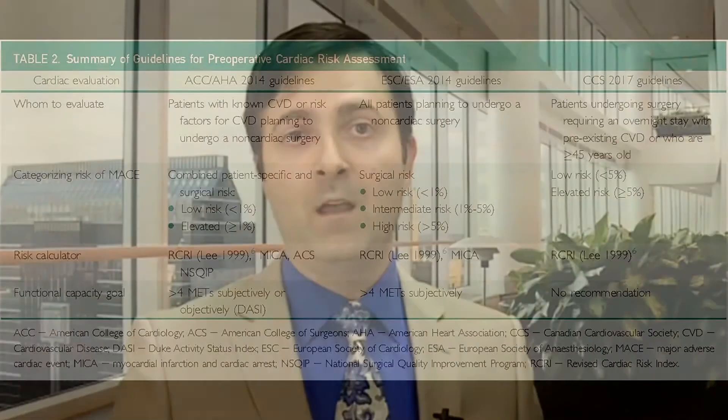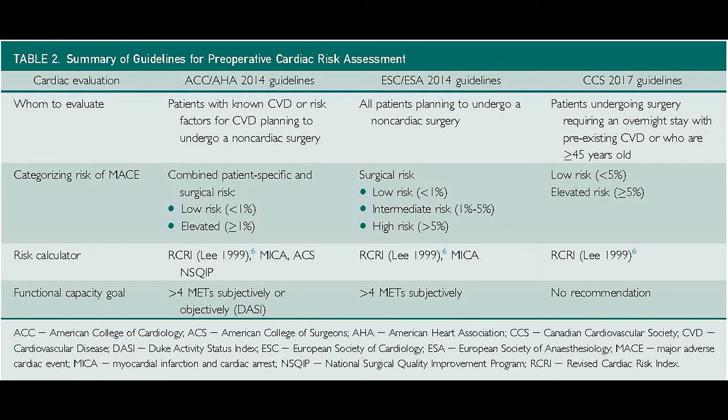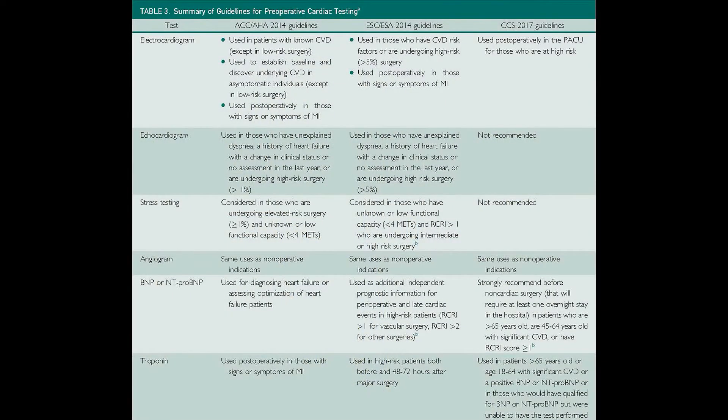All of the guidelines agree that we should pursue a stepwise assessment of procedure-specific and patient-specific risk factors. All recommend determining the surgical urgency, and all recommend additional risk stratification if there is elevated risk. The differences are in how much evaluation is needed for this additional risk stratification. US and European guidelines generally focus on clinical outcomes and therefore recommend much more testing. The Canadian guidelines focus much more on cost-effectiveness and therefore recommend reducing testing.